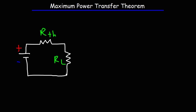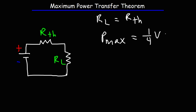In this video, we're going to talk about the maximum power transfer theorem. This theorem states that the maximum power delivered from the source to the load resistance occurs when RL, the load resistance, is equal to R sub TH, the Thevenin resistance. To calculate the maximum power delivered, you could use this formula: it's 1 over 4 times the square of the Thevenin voltage divided by the Thevenin resistance, which is the same as RL.